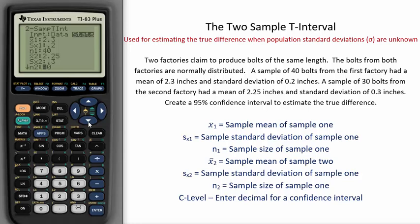We are tasked with creating a 95 percent confidence interval to estimate the true difference. For this, we will enter in 0.95 on C-level, which will create a 95 percent confidence interval.